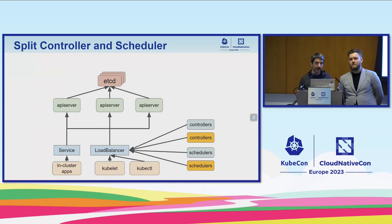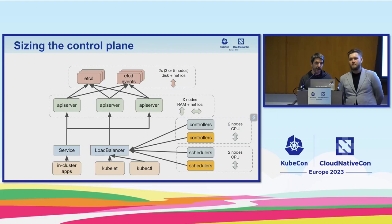Now that we've seen all these components and the different optimizations, we can talk about sizing the control plane. For HCD clusters, you usually have three or five nodes because it's a quorum-based system. We prefer to run five: if you run three and lose one, you have to be extremely careful because losing a second node means you've lost everything. With five nodes, you can still lose another one before reaching a catastrophic situation. For HCD, the most important resource is disk — make sure you have very fast disk and monitor the latency.